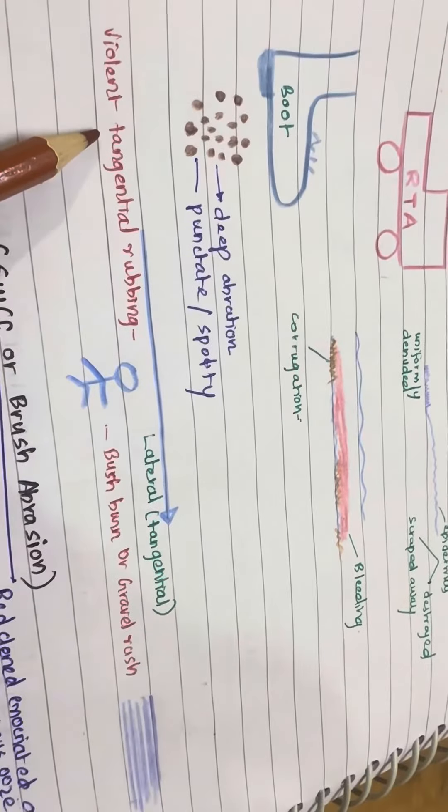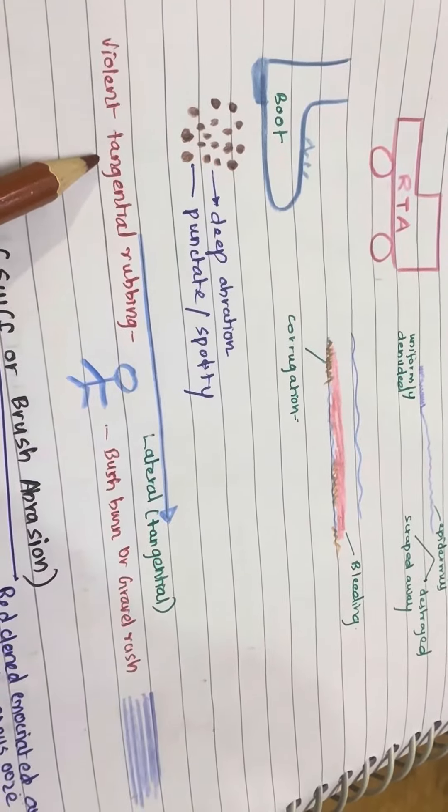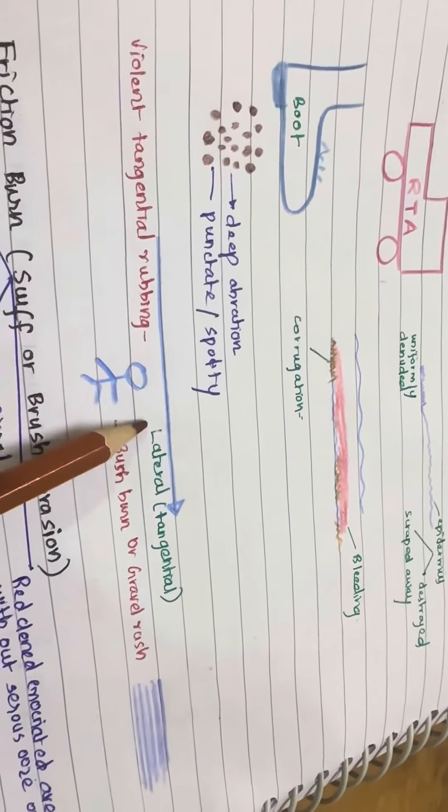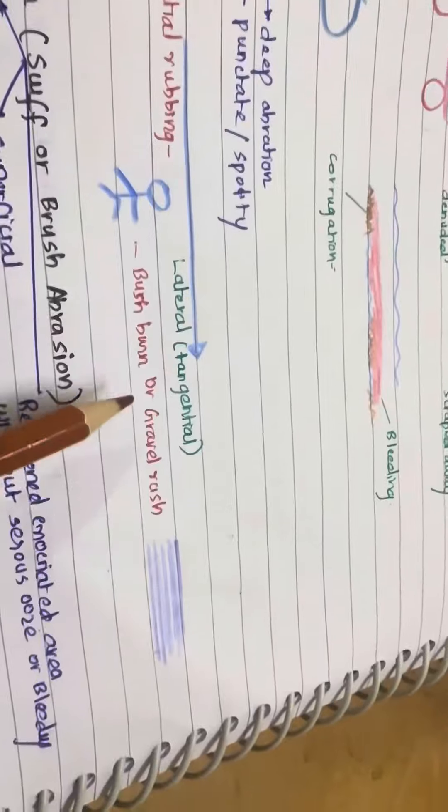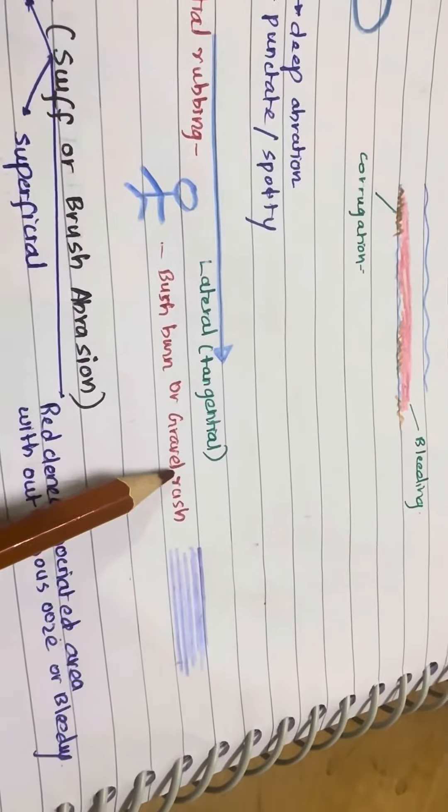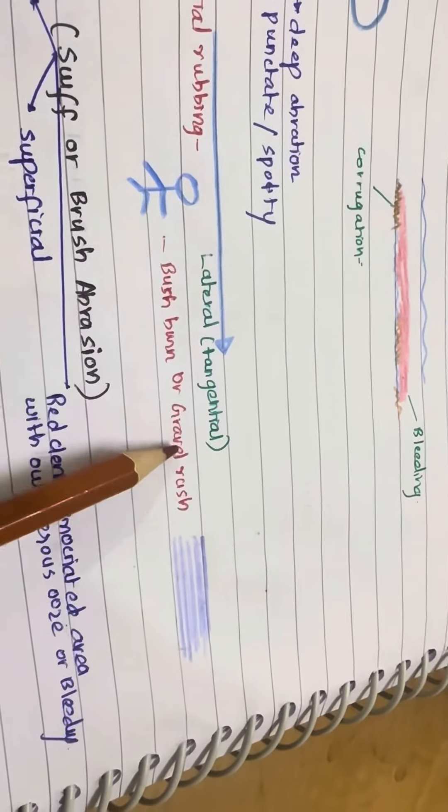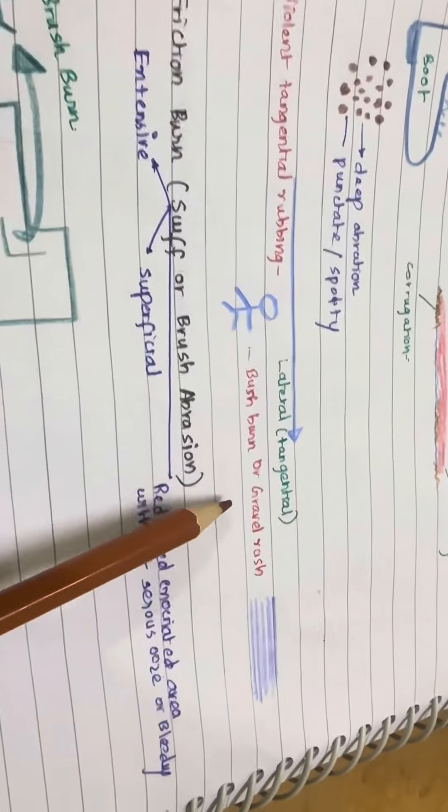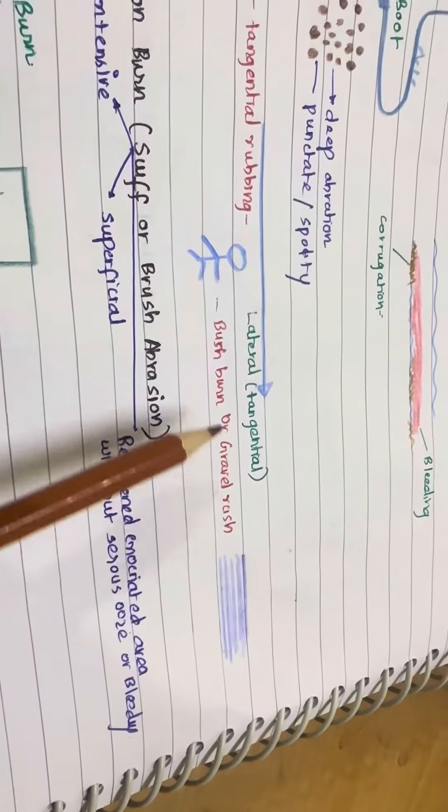An abrasion caused by a violent tangential rubbing against a rough surface, dragging over the ground, is called a brush burn or a gravel rash. Brush burn or gravel rash is a scraping injury over a large area. It occurs due to tangential contact with a rough surface.